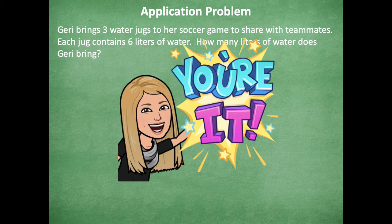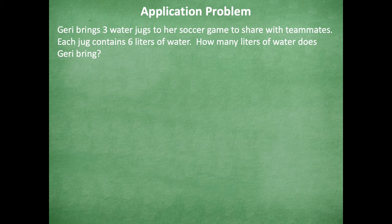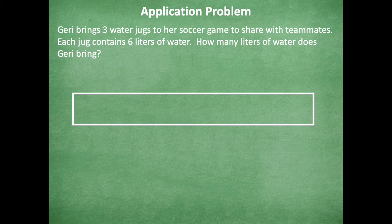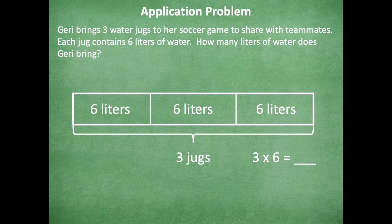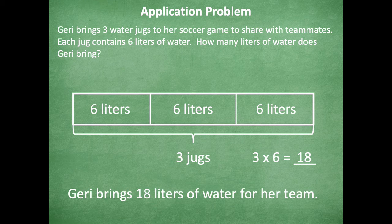Here's how I solved the application problem. I used a tape diagram and saw that Jerry brought three jugs of water with six liters in each jug — six liters in the first, second, and third jug. So three times six is how I solve this problem. Three times six equals 18, because I can count by threes or by sixes: six, 12, 18. Jerry brings 18 liters of water for her team.